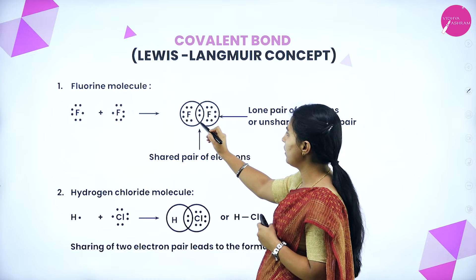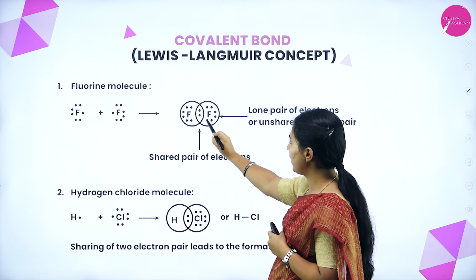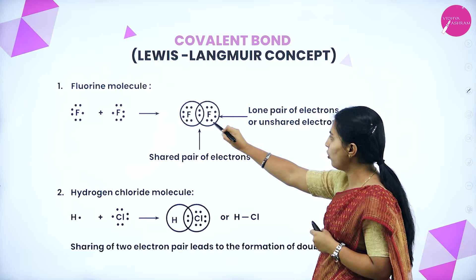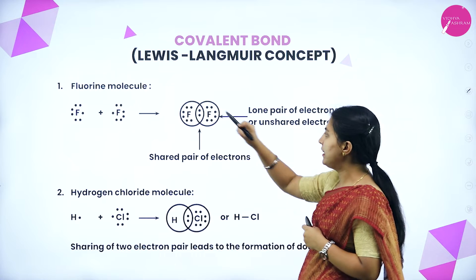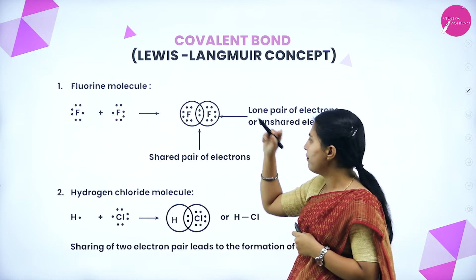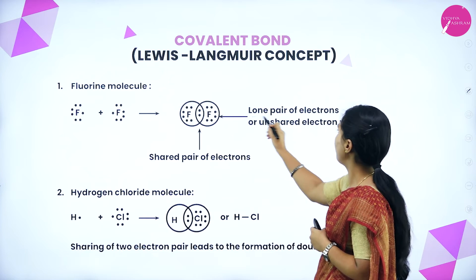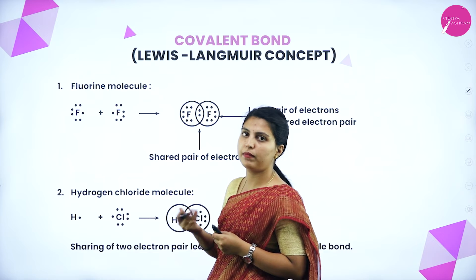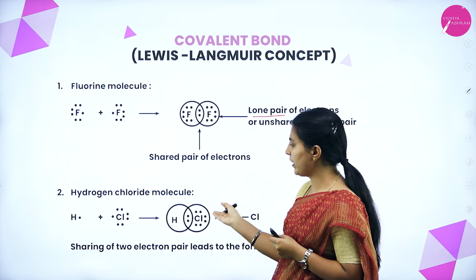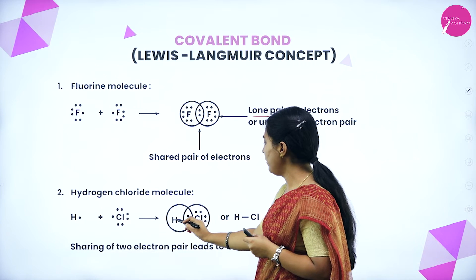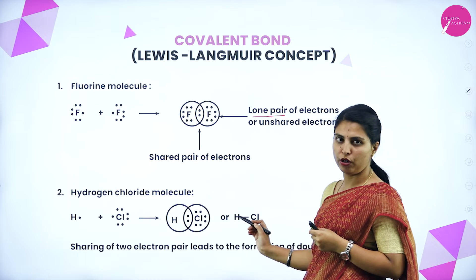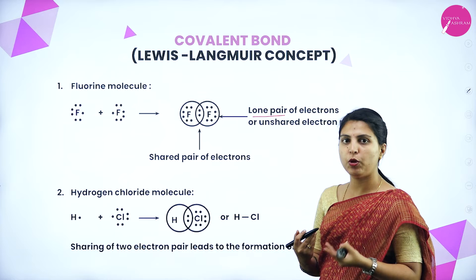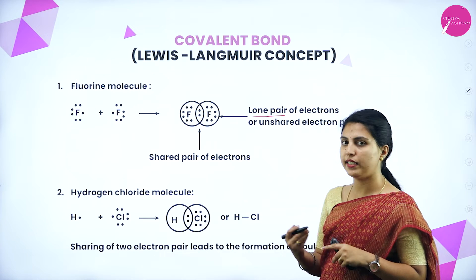Fluorine has seven valence electrons. One electron from each fluorine atom bonds together. The remaining electrons are lone pair of electrons — electrons not involved in bond formation are lone pairs, while electrons involved in bond formation are bond pairs. In the HCl molecule, one electron from hydrogen and one from chlorine form the HCl bond — this is a heteroatomic molecule since different kinds of atoms are present. Sharing of two electron pairs gives a double bond, three pairs gives a triple bond, and one pair gives a single bond.